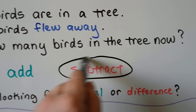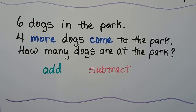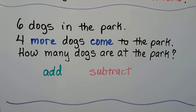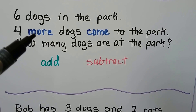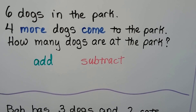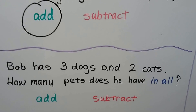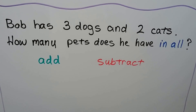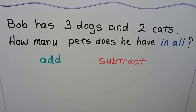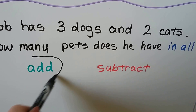Six dogs are in the park, four more dogs come to the park — how many dogs are at the park? The clue words 'more' and 'come' tell us to add the four and the six; we need a total of all the dogs. Similarly, Bob has three dogs and two cats — how many pets does he have in all? The clue words 'in all' tell us we're looking for a total, so we add.